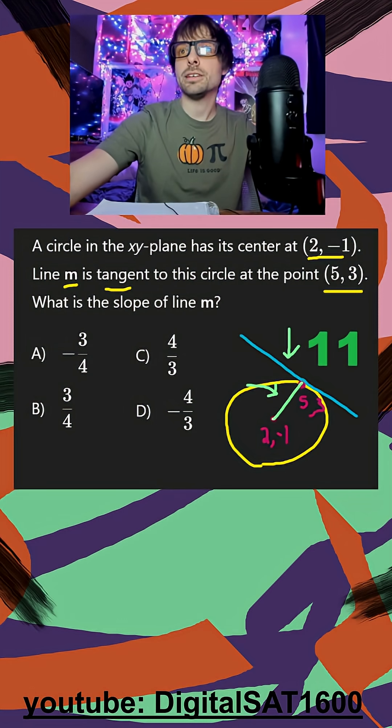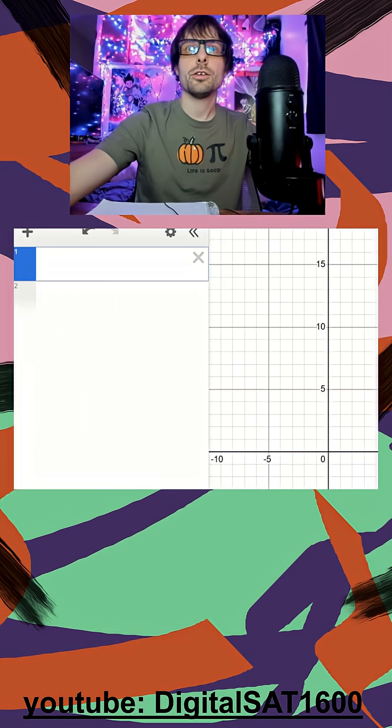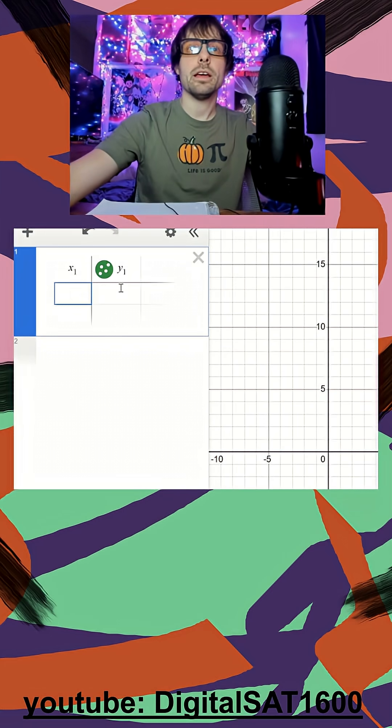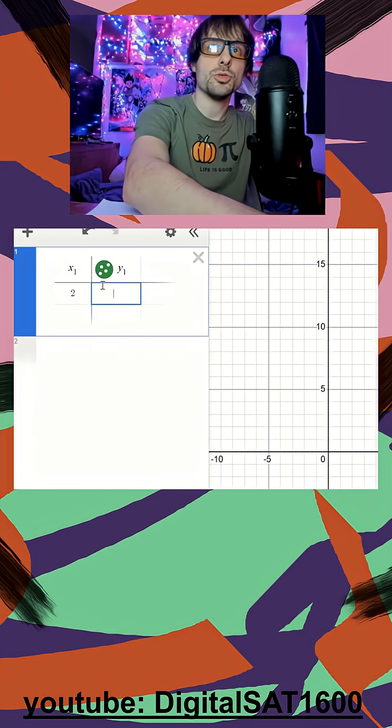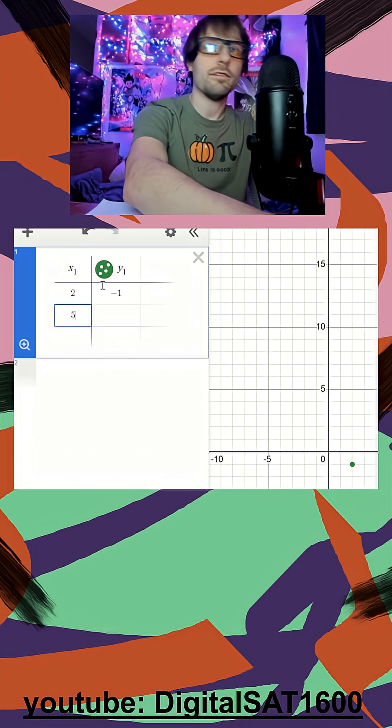All I have to do is open up my decimals here, go into a table, and throw in my two points. So 2, negative 1, and 5, 3.